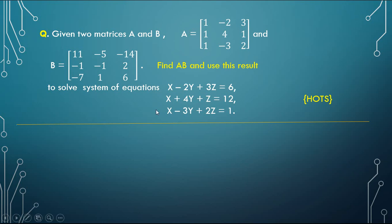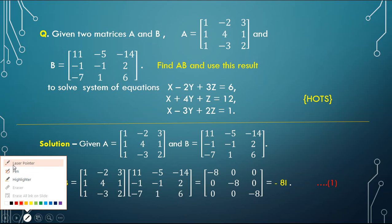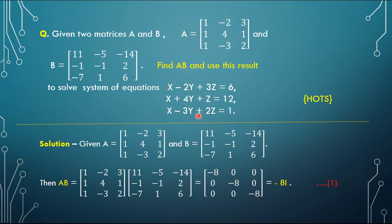Let us consider the first question. Given two matrices A and B, where A is a 3×3 matrix and B is also a 3×3 matrix. The question says: find AB and use this result to solve the system of equations — x minus 2y plus 3z equals 6, x plus 4y plus z equals 12, and x minus 3y plus 2z equals 1.